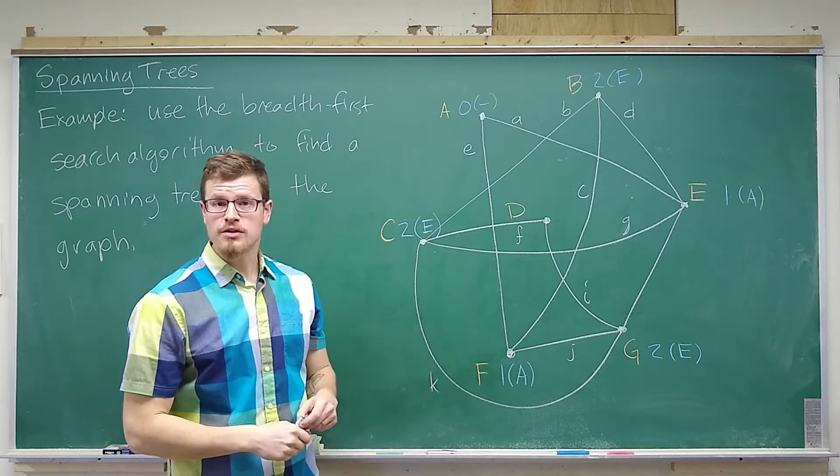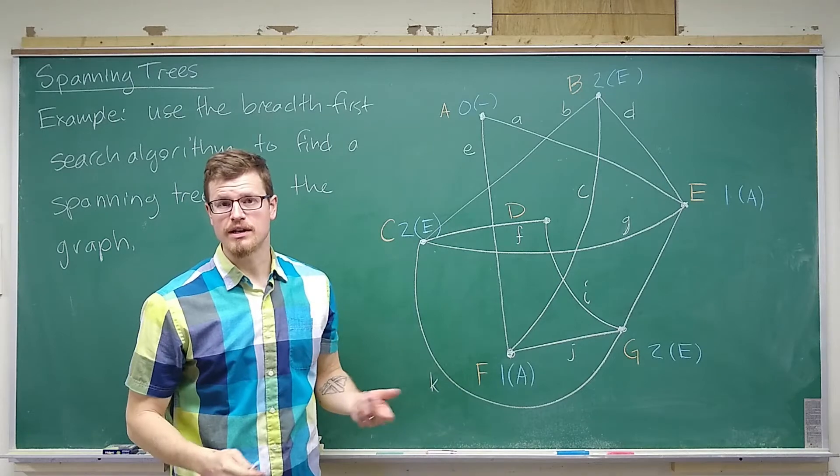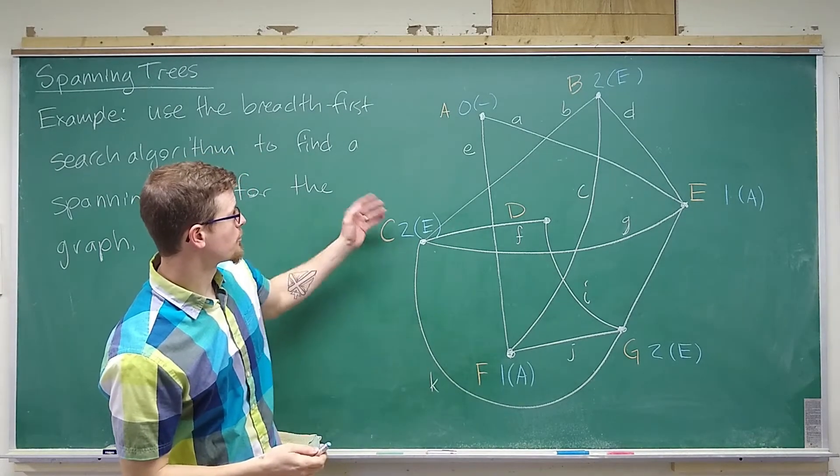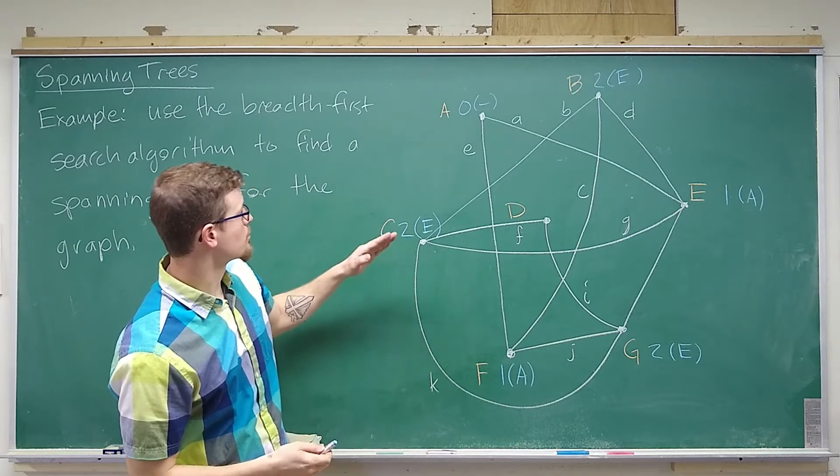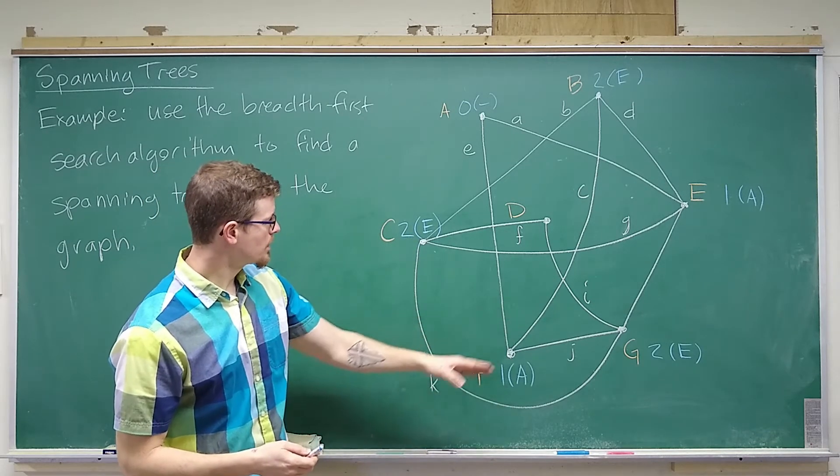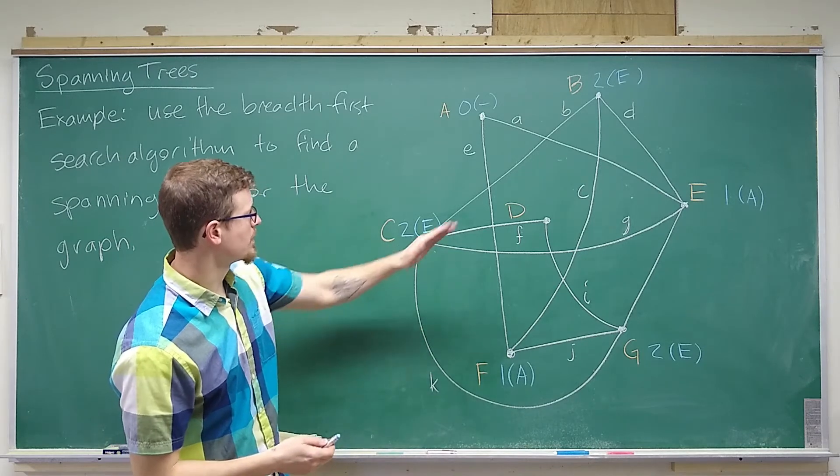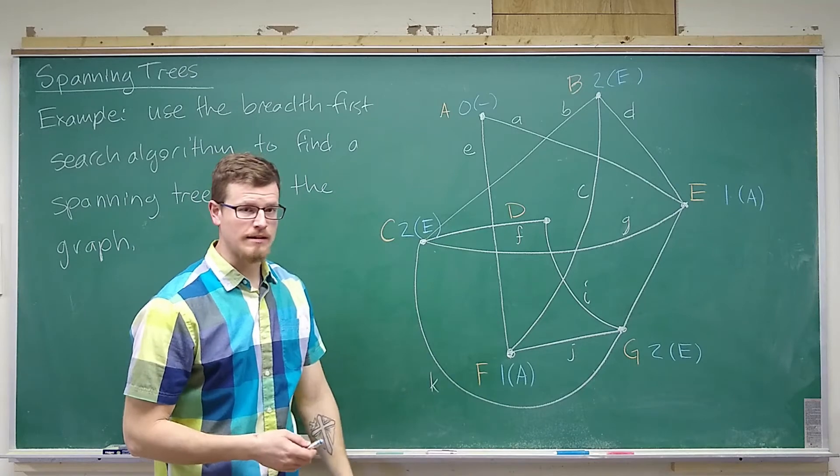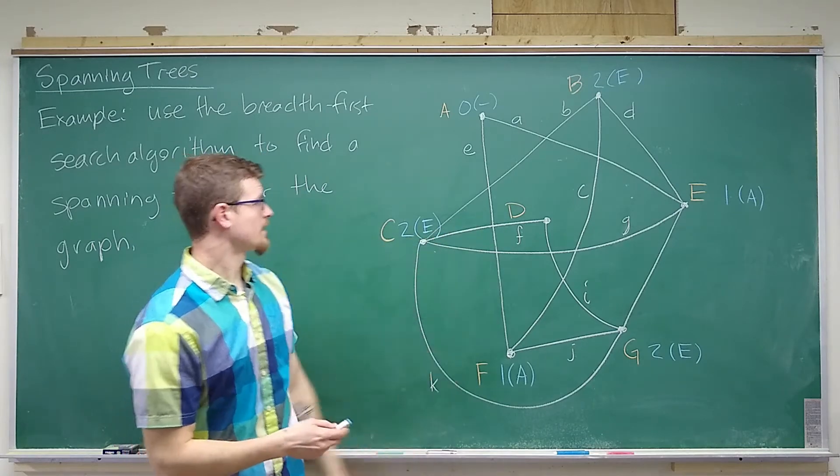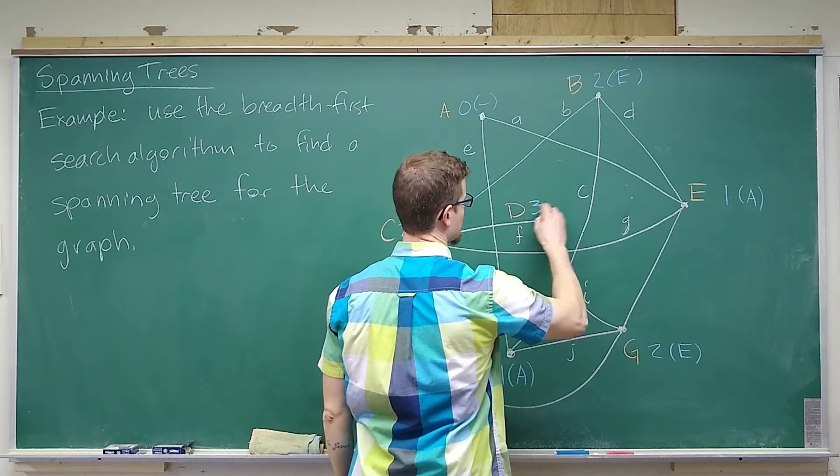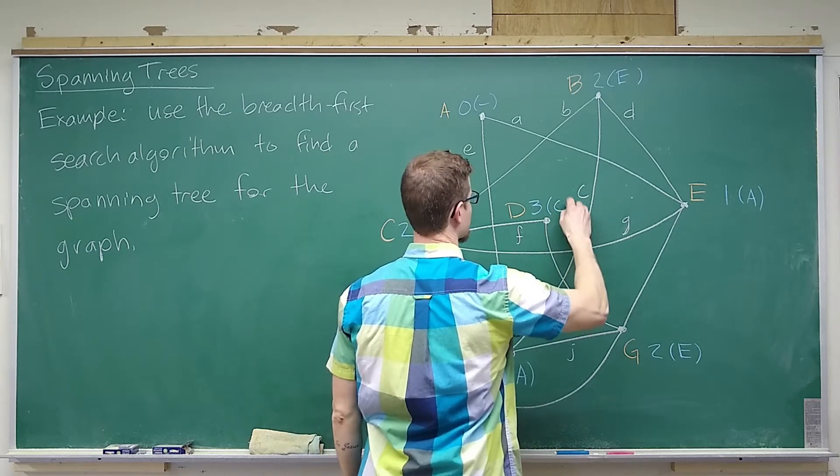We're almost done. We just need to find the things that are now a distance of 3 away. Adjacent to newly labeled C is G, but that's already labeled, E, but that's already labeled, B, but that's already labeled, and D. So D is not labeled, so we can say that D is a distance of 3 from A with predecessor C.